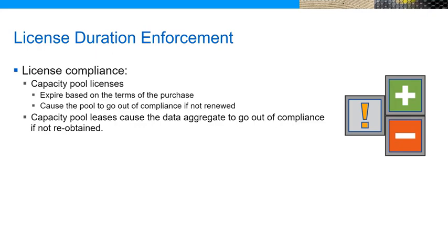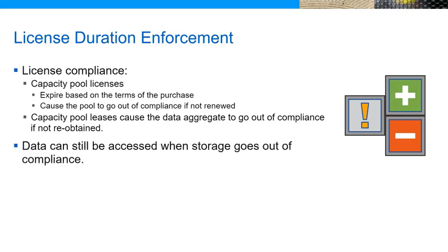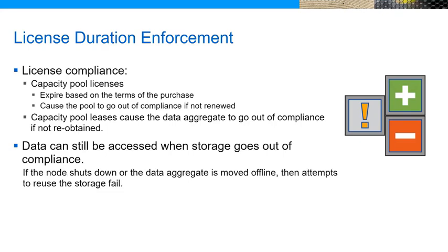If a data aggregate lease is not renewed, the previously leased capacity goes back to the pool and is made readily available for other storage operations if the capacity pool license is still valid. If both the license and the lease expire, the storage goes out of compliance. During this time, you can still access the associated data. However, if the node is shut down or the data aggregate is moved offline, attempts to reuse the storage fail.